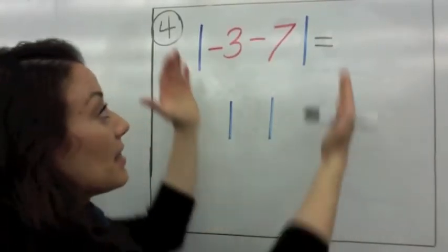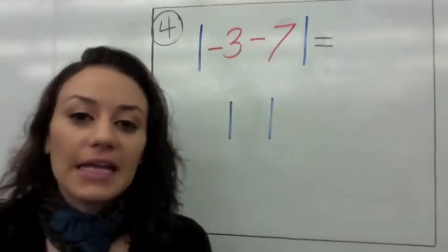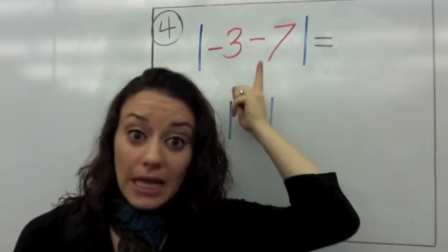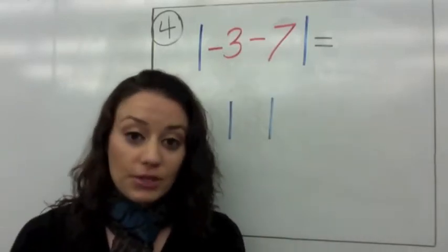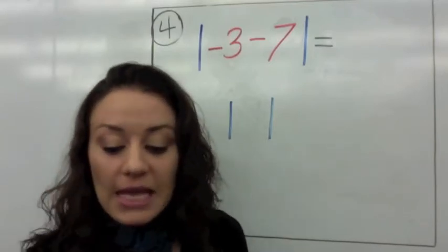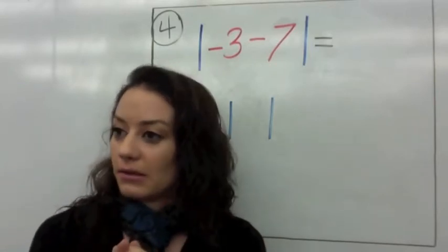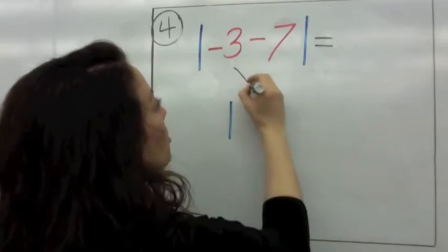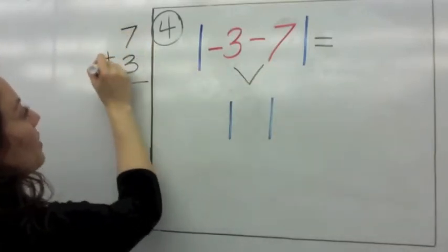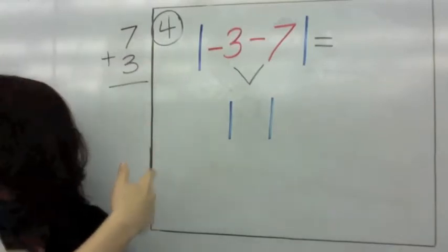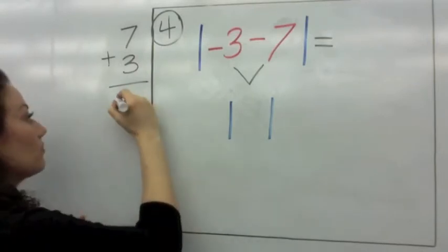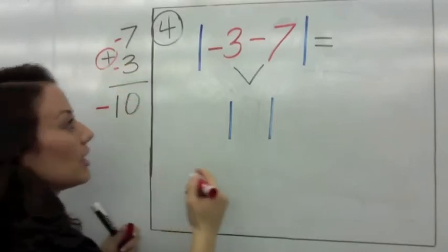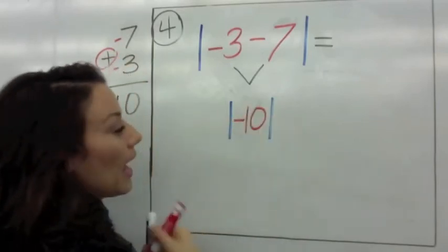Read the last example with me. It says the absolute value of negative 3 minus 7. Now, negative 3 minus 7 is actually saying negative 3 plus negative 7 more. They're both negative — do they have the same signs or different signs? They have the same signs. So you say: same signs add and keep. Keep the sign — what's the sign of these numbers? It's negative. So we add 7 and 3 together: 7 plus 3 is 10. But you keep the negative, so you get negative 10.